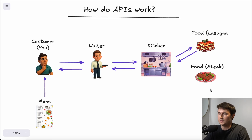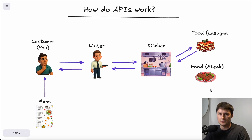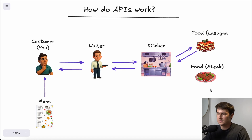The whole point of this system is to extract complexity. The kitchen is very complex — there are lots of different ingredients, foods, and meals. But if you go up to the kitchen yourself, bypass the waiter, and don't have a menu, and ask for some random food, they might not have it, or they might produce a meal you didn't want. So it's a way to extract complexity and ensure you get exactly what you want.